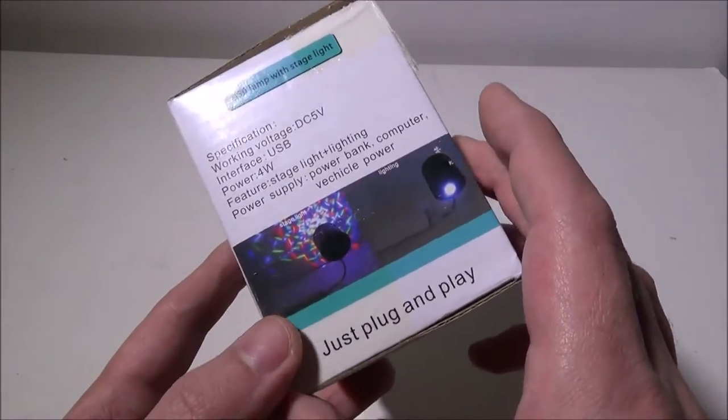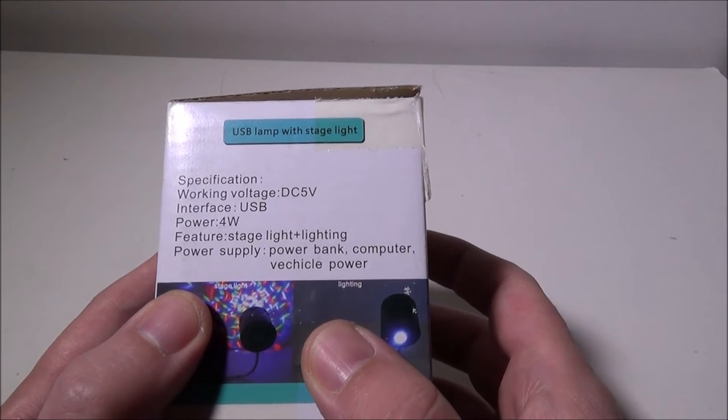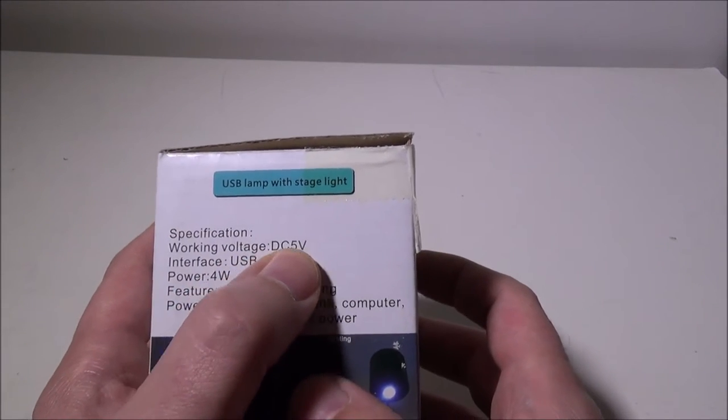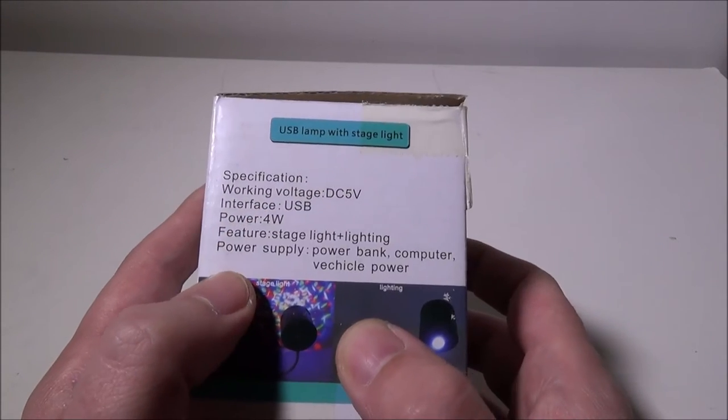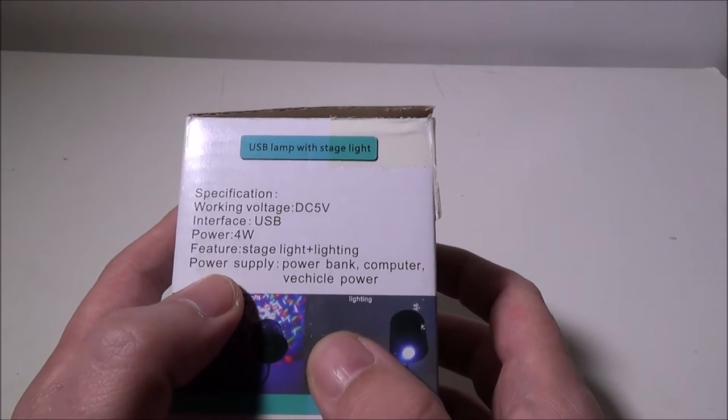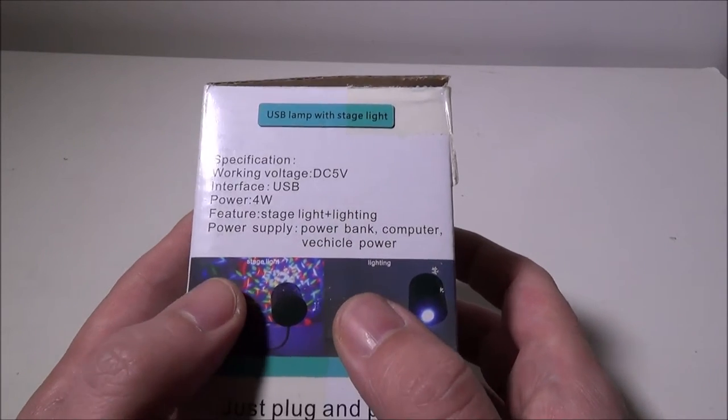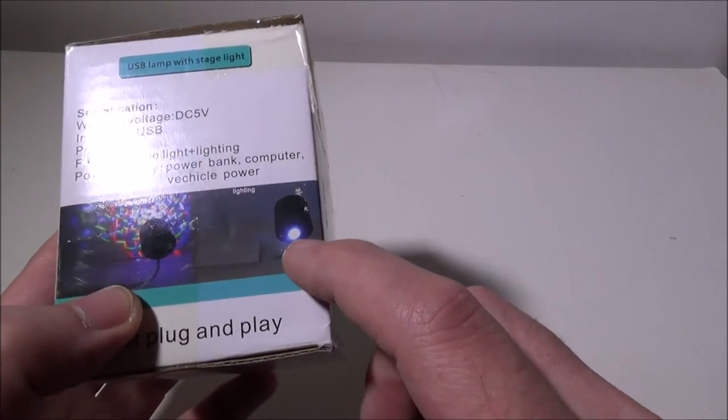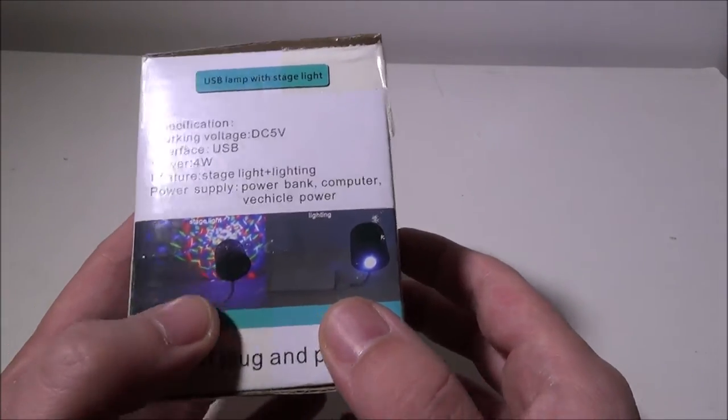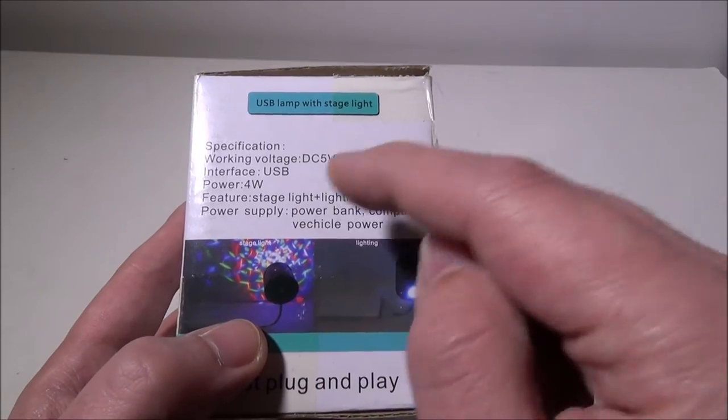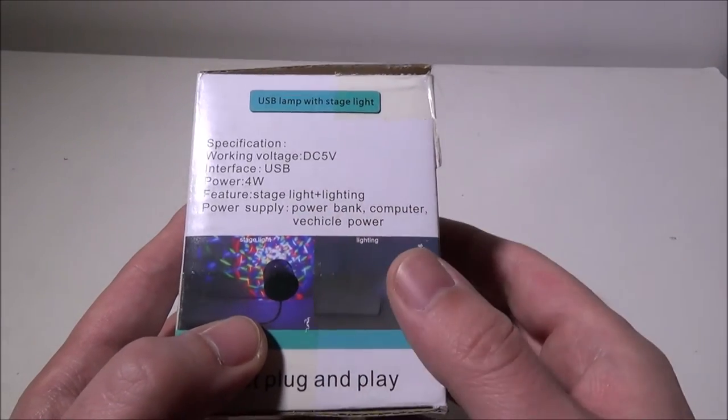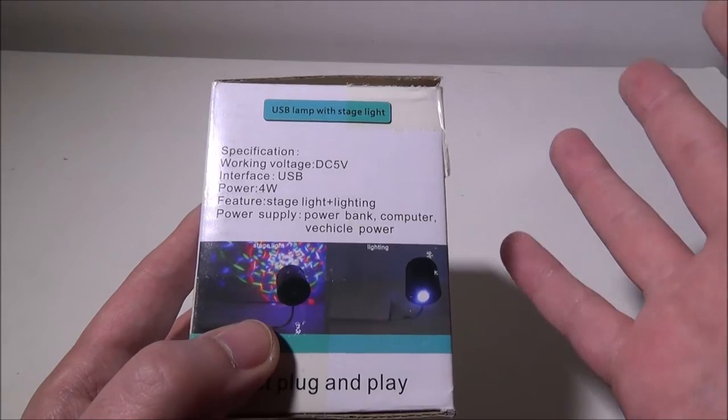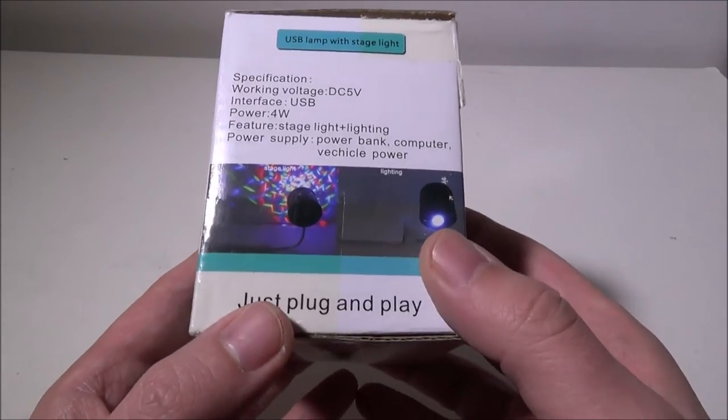We can go over this really quickly. The specifications on this are the working voltage is DC 5 volts, USB interface, power is 4 watts, and it does have a regular white light that you can use as you can see pictured here. Then it has a stage light which has a bunch of multicolor lights and the actual dome of this device turns and will show on your wall or ceiling or wherever you want to plug it in.